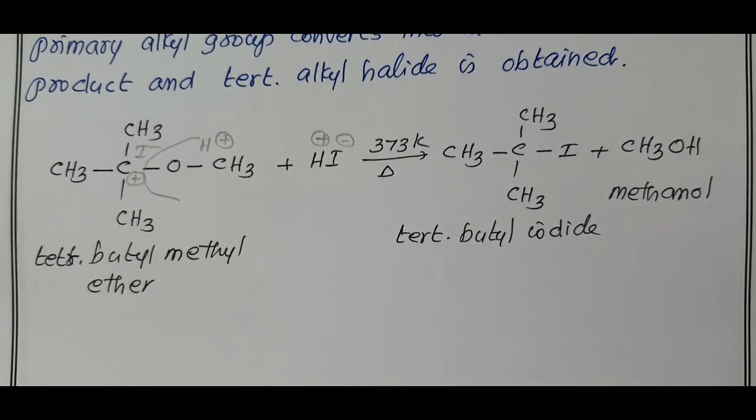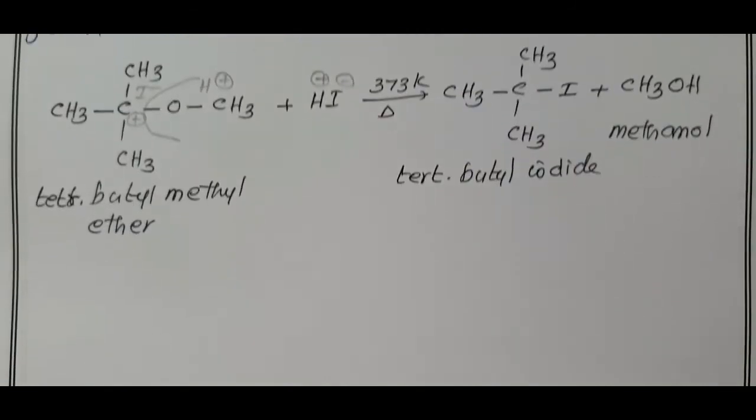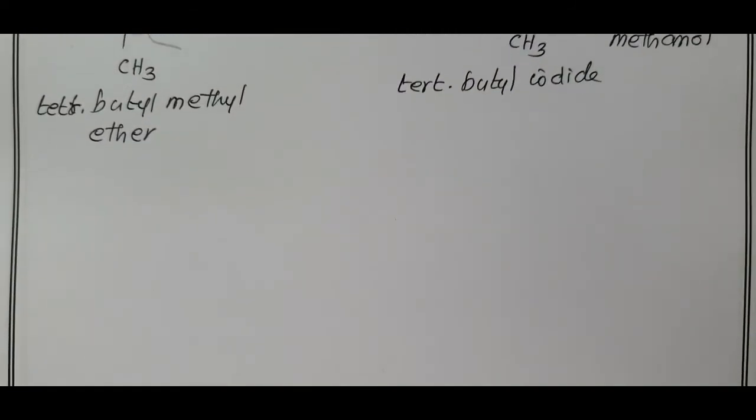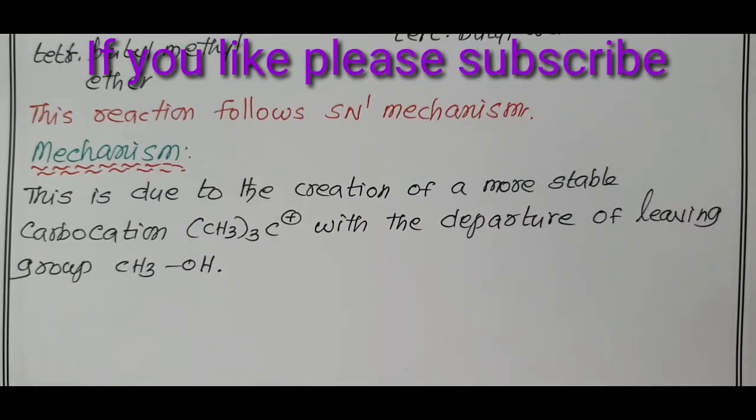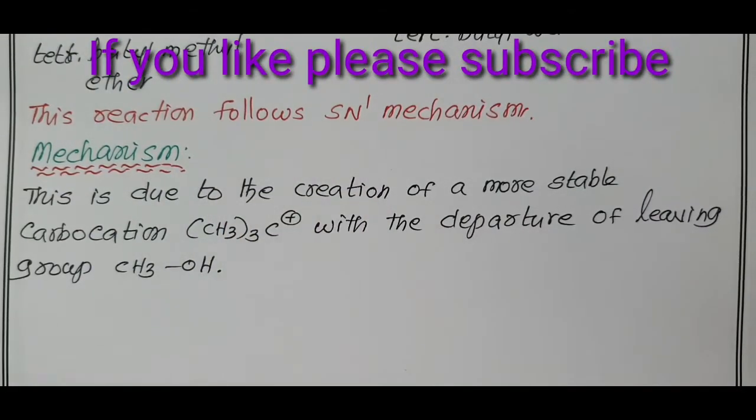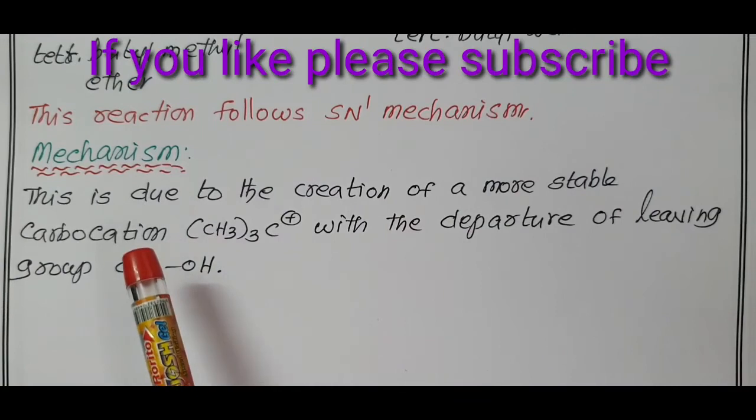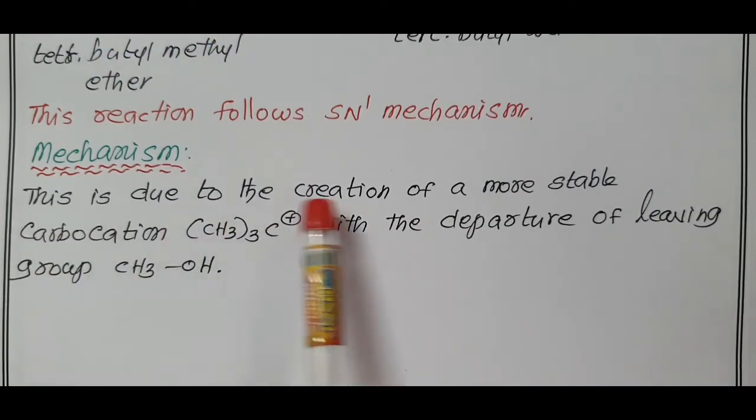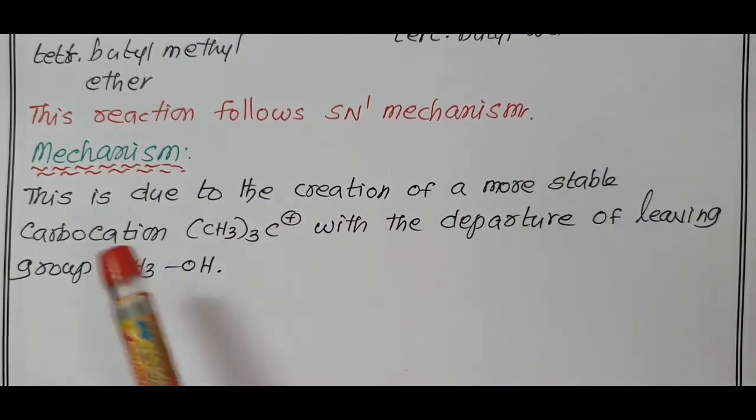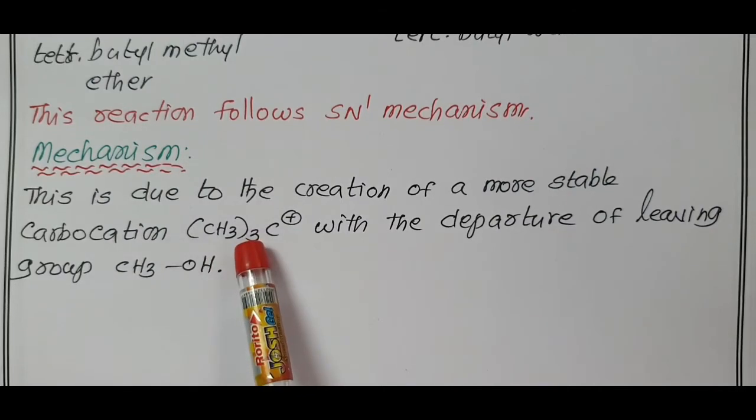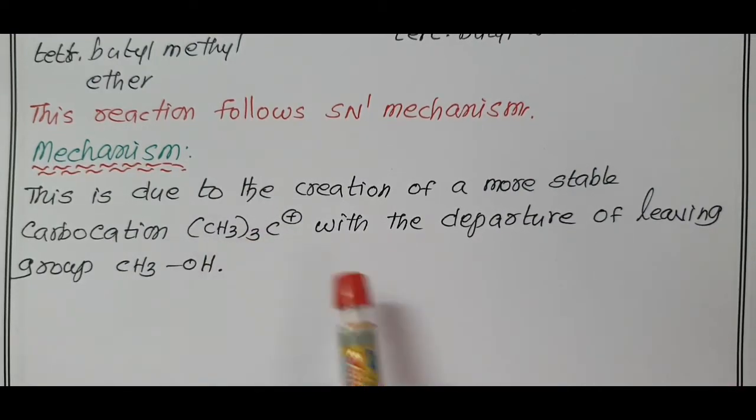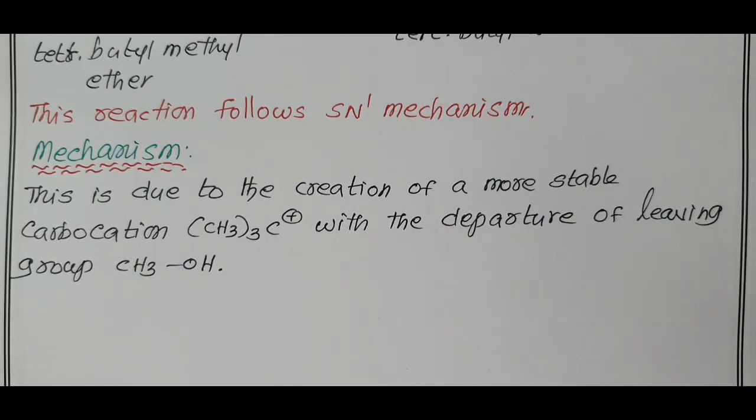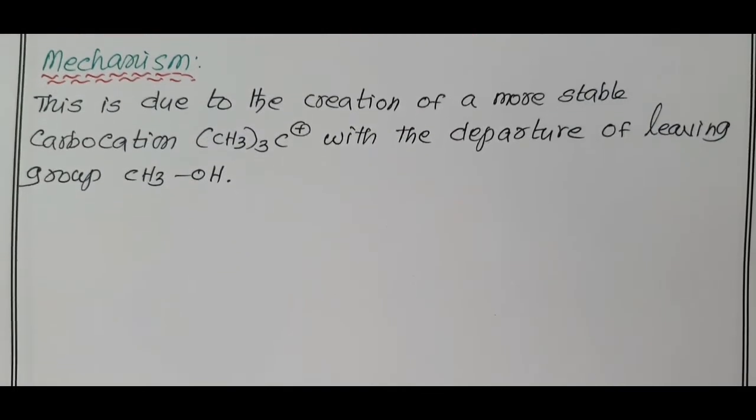This reaction follows SN1 mechanism. Now we are going to study the mechanism of this reaction. This is due to the creation of a more stable carbocation, tertiary butyl carbocation, with the departure of leaving group methyl alcohol. In two steps, the mechanism takes place.